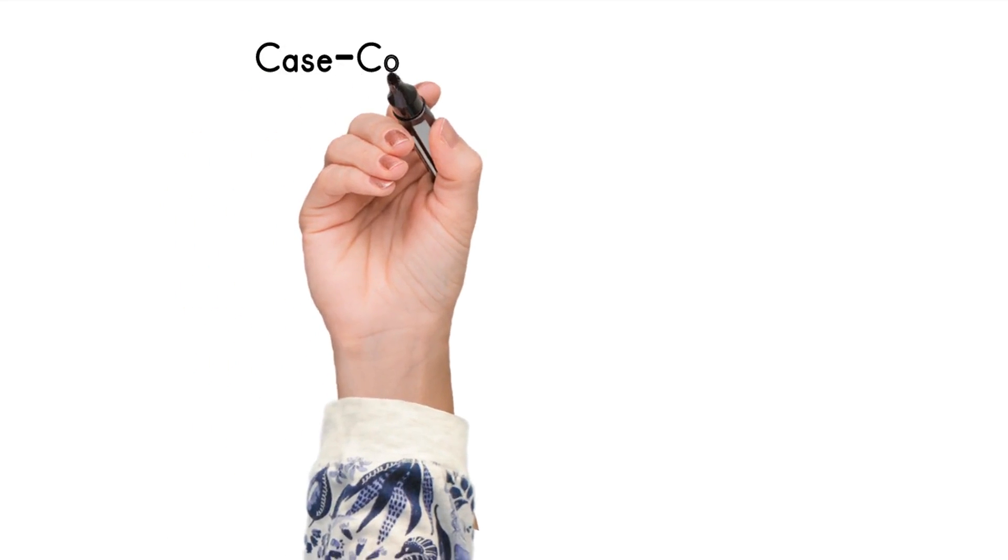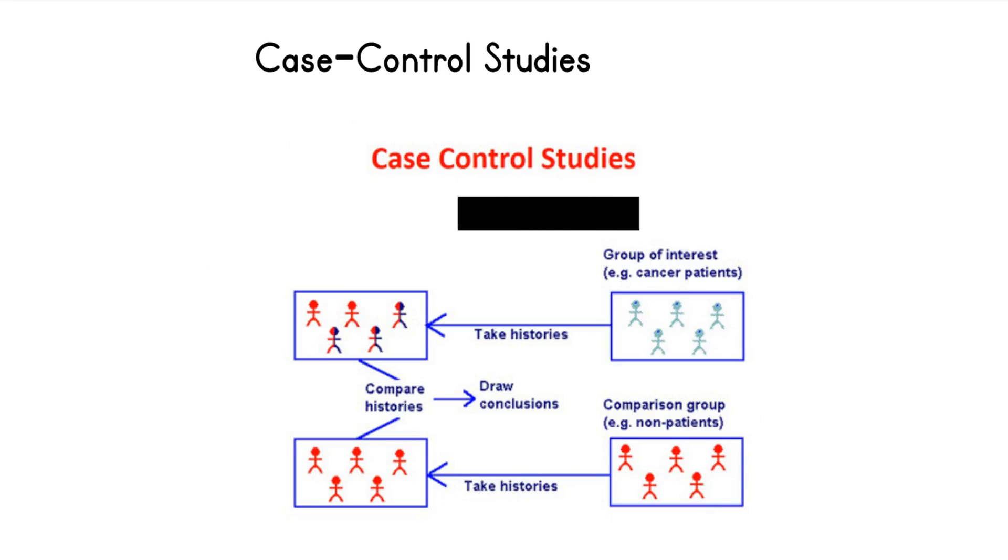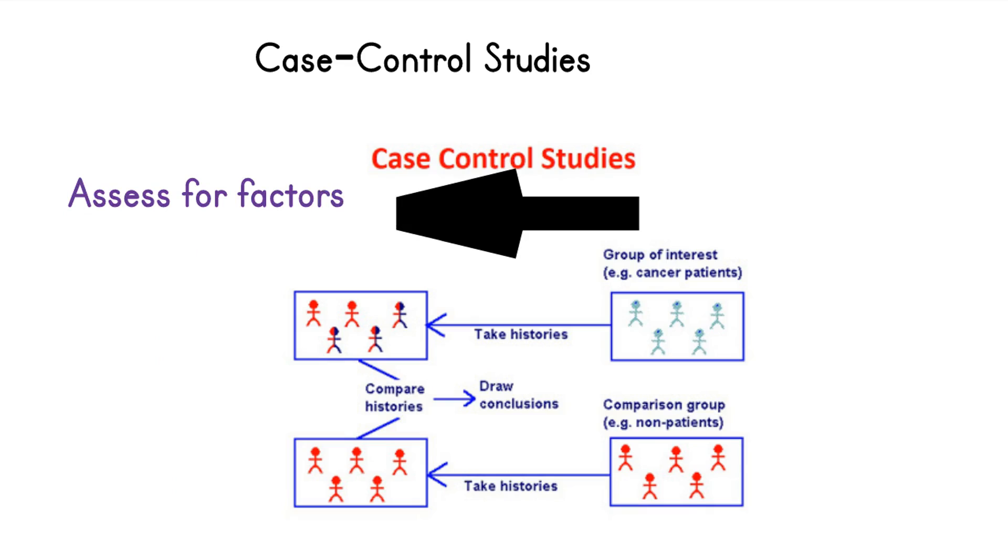Case control studies ascertain outcome status first, then determine exposure. Here we start with cases, for example, compare a group of patients with cancer and another group without cancer. Compare the characteristics or factors between the two groups and draw conclusions.